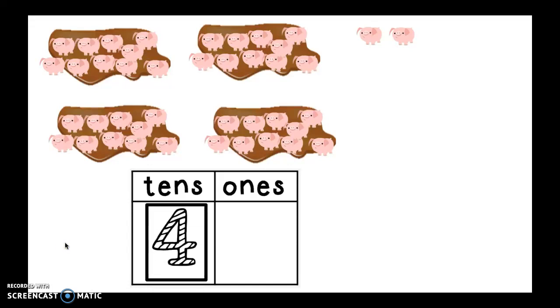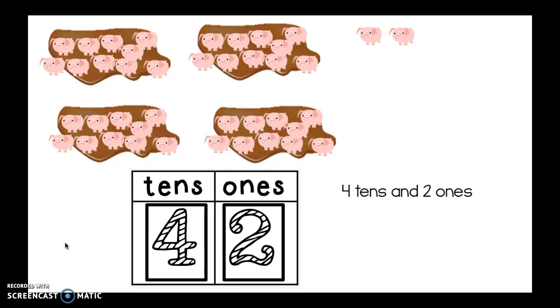And I want to count how many ones of piggies I have. One, two. So I'm going to say two ones. If I wanted to write that out the say ten way, I could say four tens and two ones.